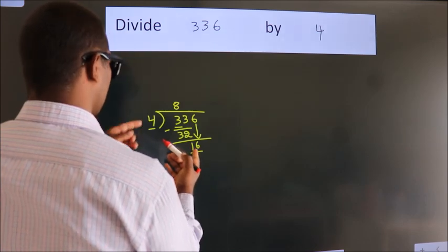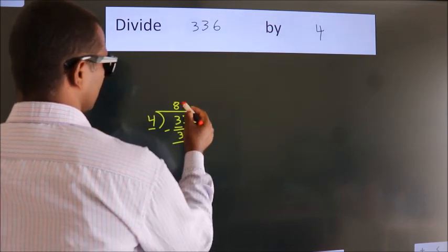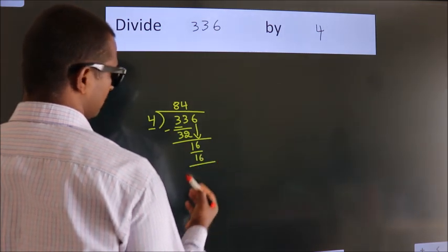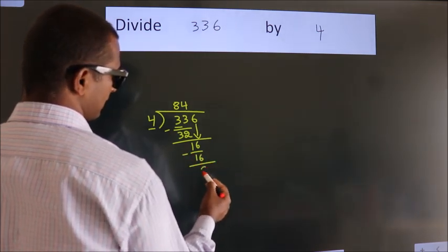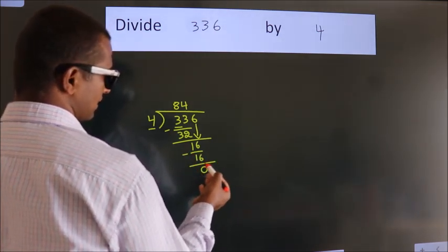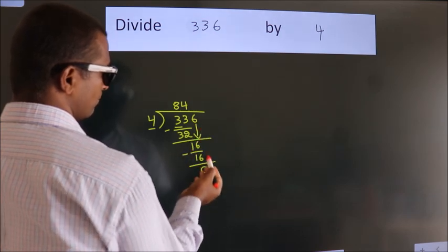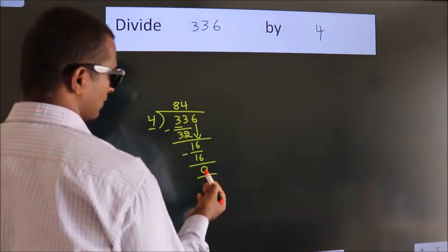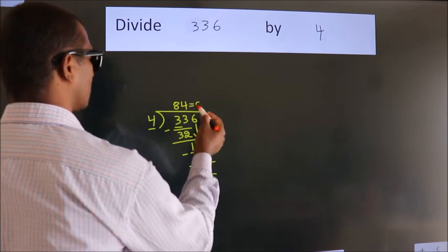When do we get 16 in the 4 table? 4 4s 16. Now we subtract. We get 0. After this, no more numbers to bring down. And we got remainder 0. So this is our quotient.